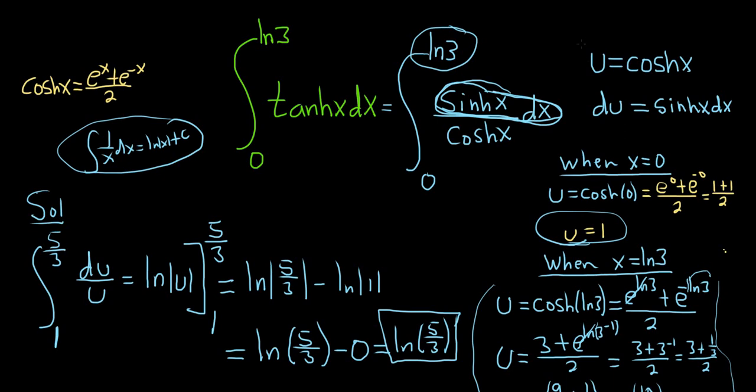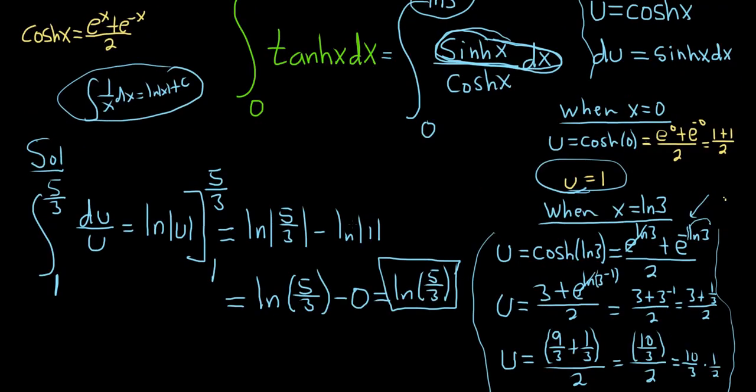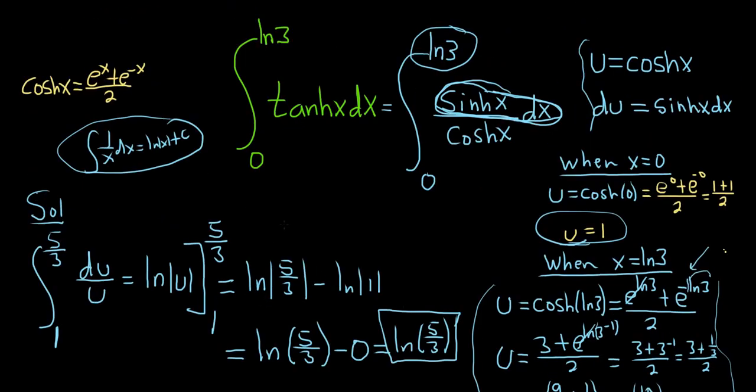Kind of a nice problem because you do make a substitution, and then you do have to change the limits. And in order to do that, you really have to know the definition of cosh, which is really important. And you do have to know some log stuff, and the fractions do get messy, but it's not impossible. It's a nice, solid problem. I hope this video has been helpful.